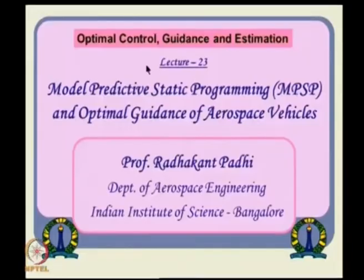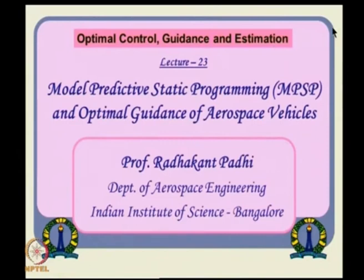Hello everyone. We will continue with our lecture series on this optimal control guidance and estimation course. So far, we have seen the calculus of variations approach, which leads to this two-point boundary value problem, followed by LQR, which is a subset of that, and then a little bit of extension in the framework of SDI and theta-d. In the last couple of lectures, we have also seen what is the dynamic programming approach, where it leads to the HJV equations.